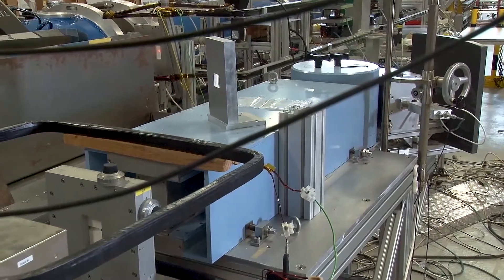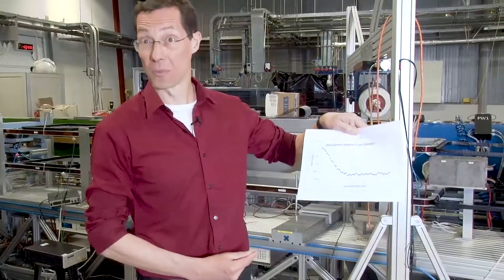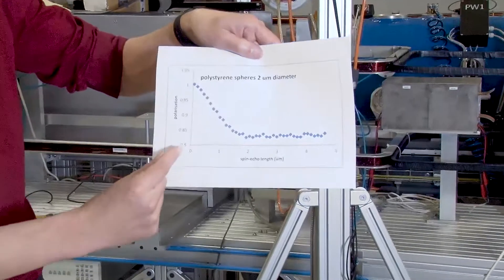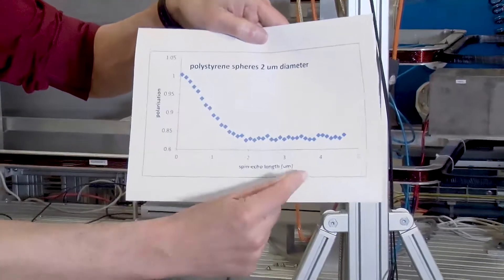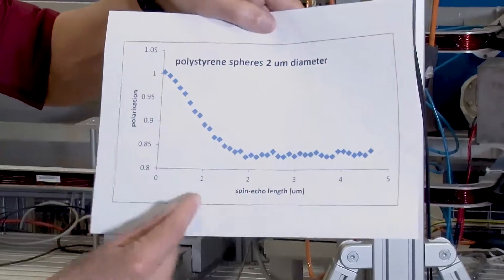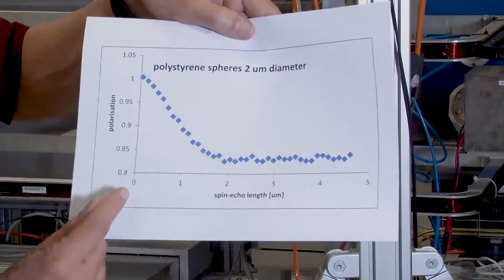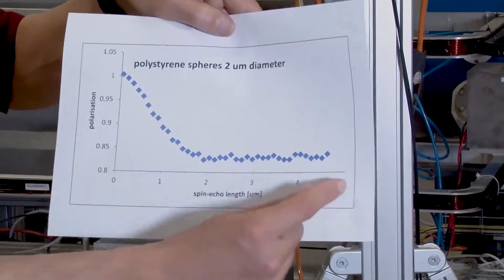Here you see an example of a measurement. What you see on the vertical axis, that's the polarization that we measure in the end of the setup. And on the horizontal axis, you see the applied magnetic field that can be converted into a length scale. Here it's going up to 5 micrometers.